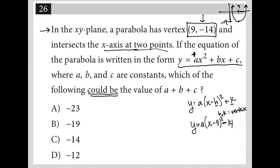Now if I were to convert this form into standard form, this would turn into y = a, and if I broke this down into (x - 9)(x - 9), I'd get x² - 18x + 81, close parentheses, and then minus 14. When I distribute the a across to each thing in the parentheses, I'd have y = ax² - 18ax + 81a - 14.